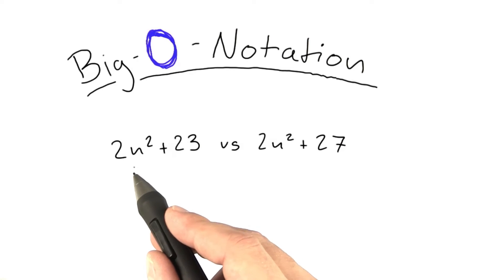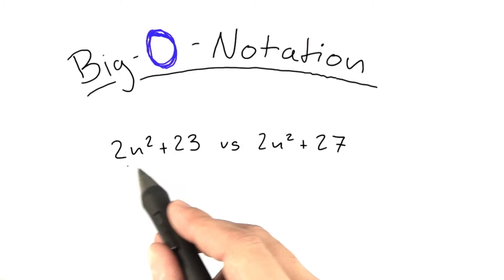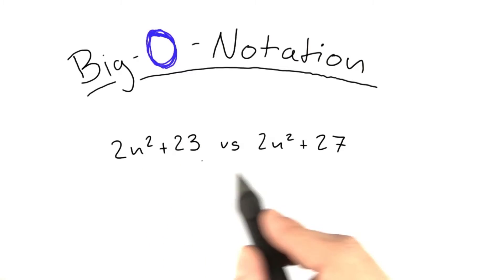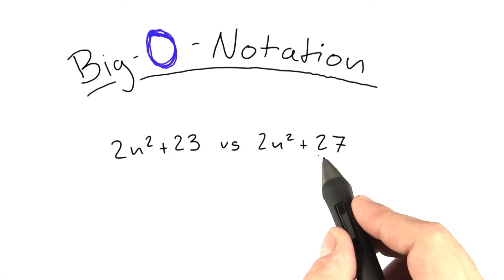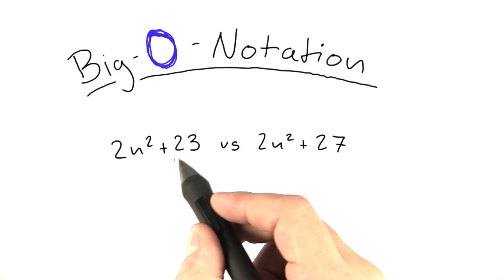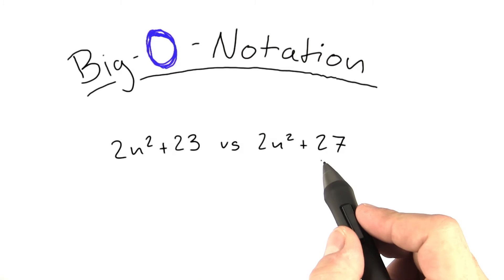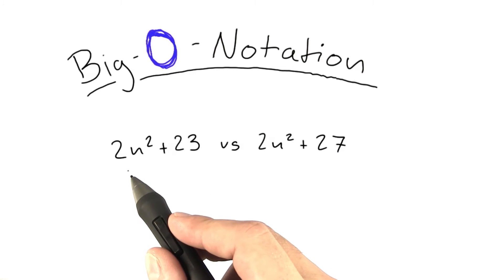So for example, if you had two algorithms and one had a running time of 2n squared plus 23 time steps, and the other one had 2n squared plus 27 time steps, you wouldn't really care about the 23 or the 27. You would say that essentially they have the same running time.